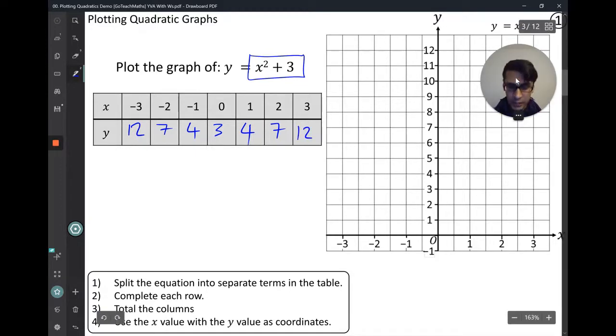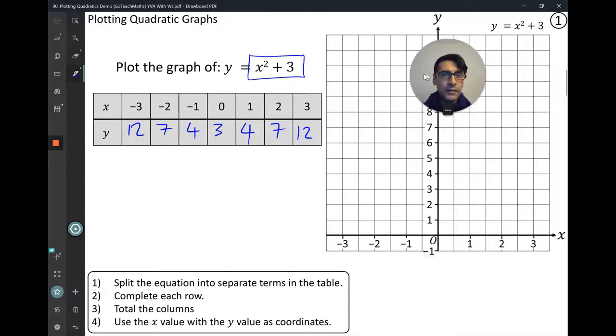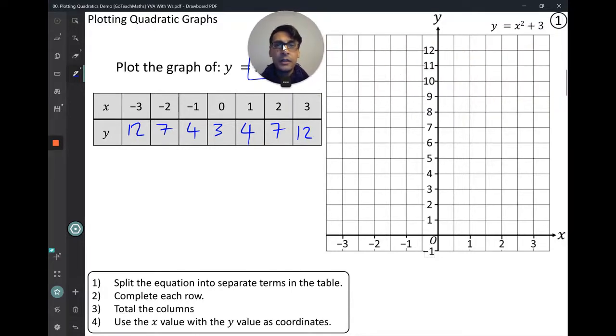So we have our values here. What we're going to do now is plot these. Now you have to plot these in a very specific way. You can see that the first coordinate we're going to plot is negative 3, 12. So you go to your origin there. And then you're going to go to negative 3, which is here, and then up to 12. You must do a cross. Do not do a dot like that. The exam scanners can't see dots or they might miss them.